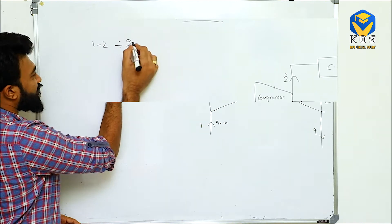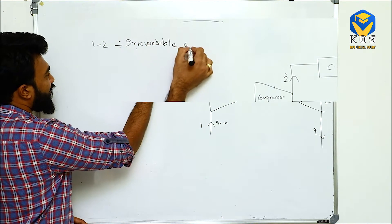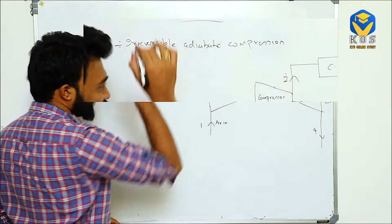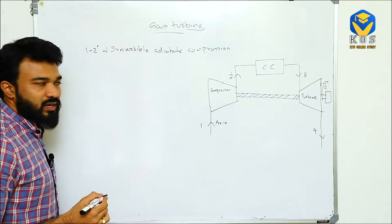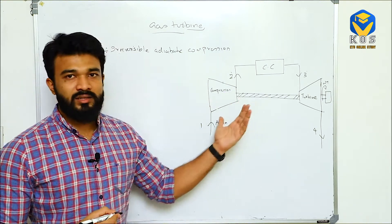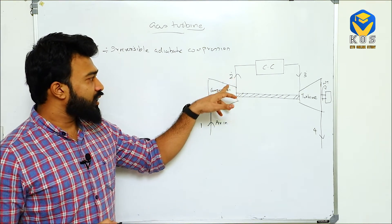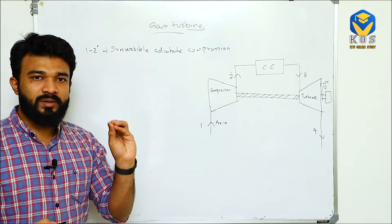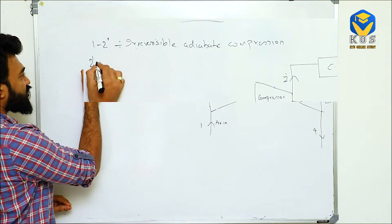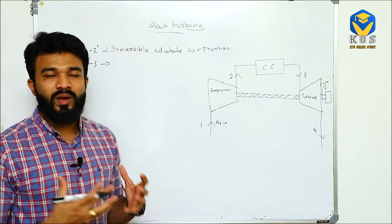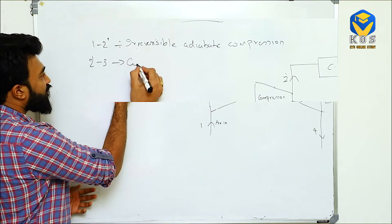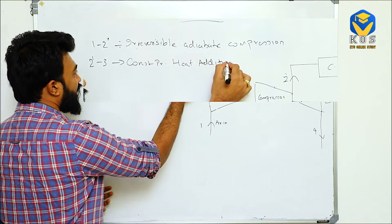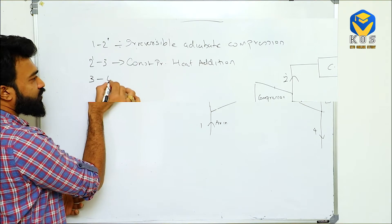For the actual cycle analysis: process 1 to 2' is irreversible adiabatic compression, which happens inside the compressor. Process 2' to 3 happens inside the combustion chamber where heat is supplied — this is constant pressure heat addition, and it takes place inside the combustion chamber.